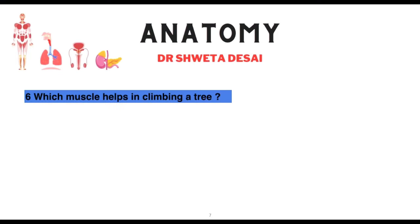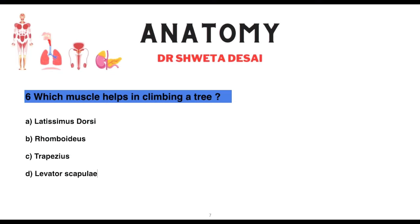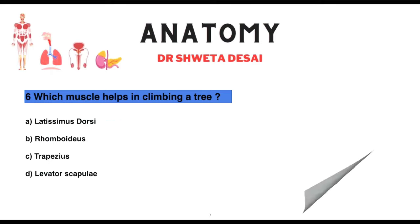Which muscle helps in climbing a tree: latissimus dorsi, rhomboids, trapezius, or serratus anterior? It is the latissimus dorsi — it is also known as the climbing muscle.